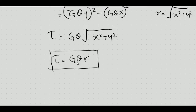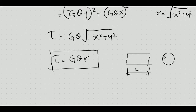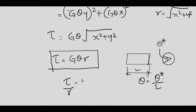Here θ represents the angle of twist per unit length. If we have a bar of length l and the total angle of twist is θ*, then θ = θ*/l. So we can write τ/r = Gθ*/l, which is the same equation studied in elementary solid mechanics.